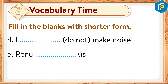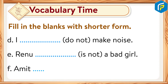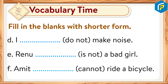E: Renu is not a bad girl — Renu isn't a bad girl. F: Amit cannot ride a bicycle — Amit can't ride a bicycle.